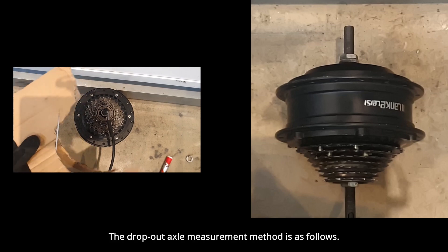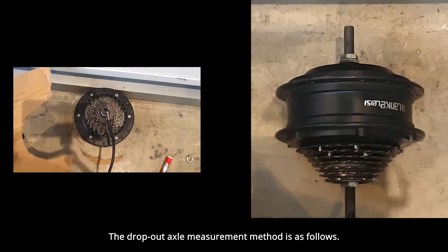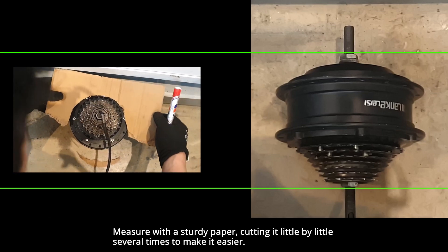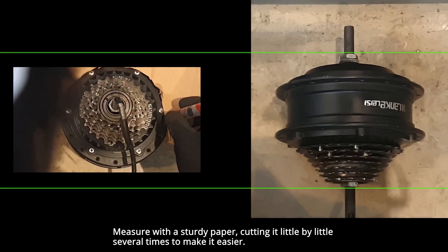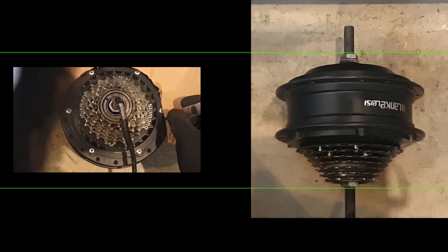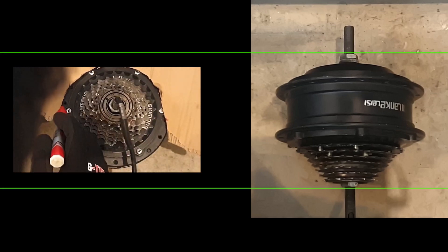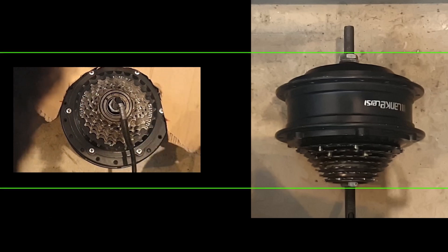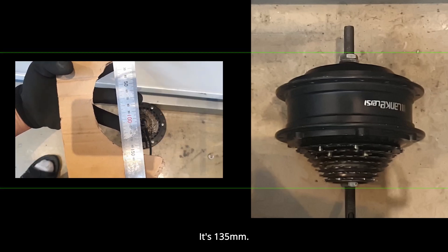The drop-out axle measurement method is as follows. Measure with a sturdy paper. Cutting it little by little several times to make it easier. It's 135 millimeters.